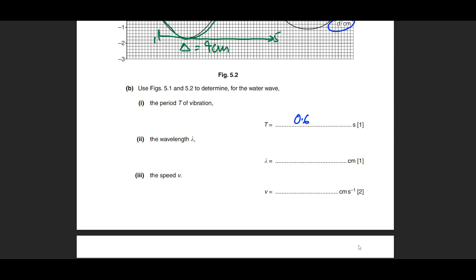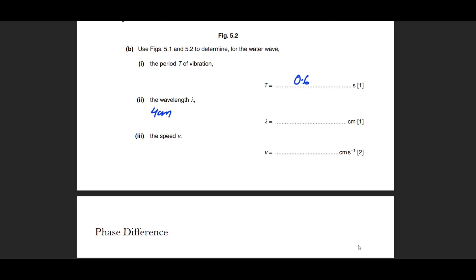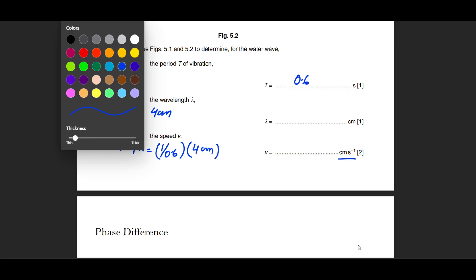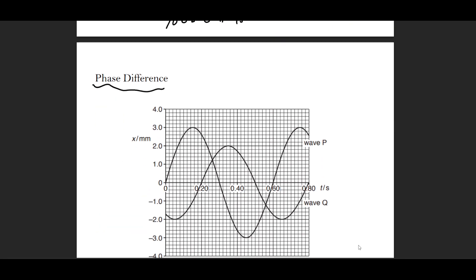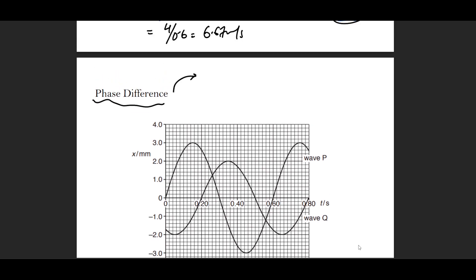With T = 0.6 s and λ = 4 cm, find the speed. Using v = fλ = (1/T) × λ = (1/0.6) × 4 = 4/0.6 = 6.67 cm/s, or approximately 6.7 cm/s. Note: since the answer is in cm/s, converting to meters is unnecessary here.